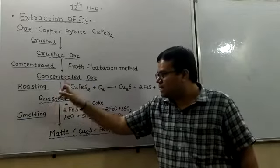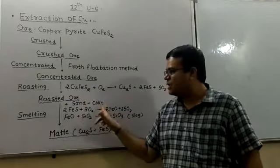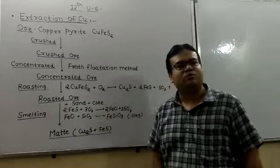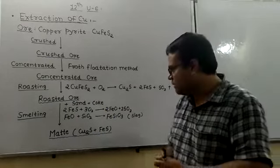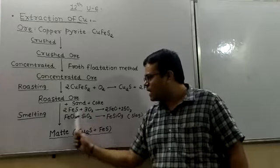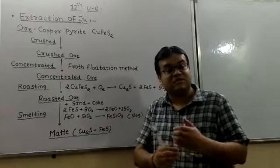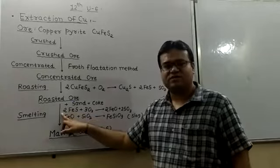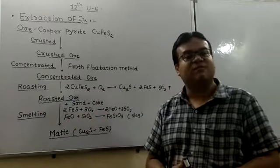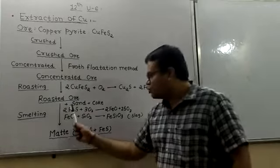Once we have this roasted mass, then we are adding sand and coke and then we apply the process of smelting, means this mixture is heated at very high temperature. In that case, whatever iron sulfide is present, which is the prominent impurity, until we are not removing this, it is not possible to convert cuprous sulfide to cuprous oxide.